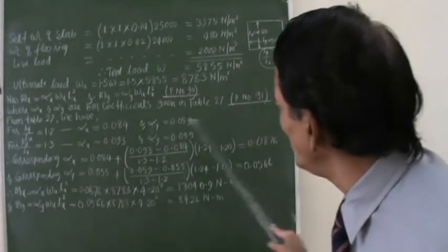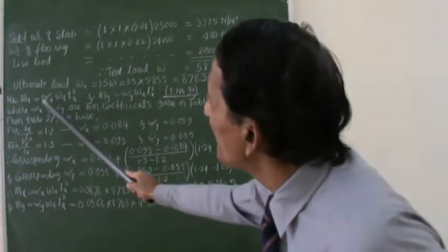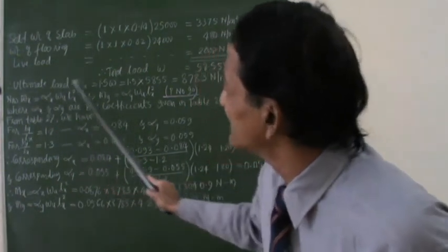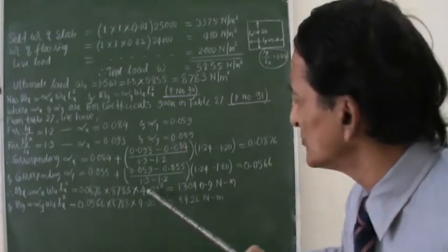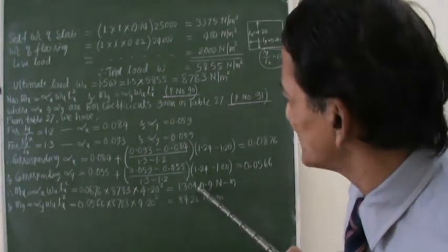So now alpha X value is now here, alpha Y value is now here. So now if I put alpha X value, alpha Y value here, I will get MX and MY. So now MX, I will put all the values just to check for us. And you have MX value so much.